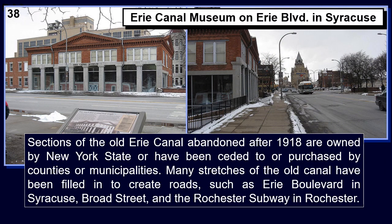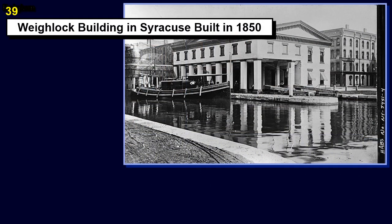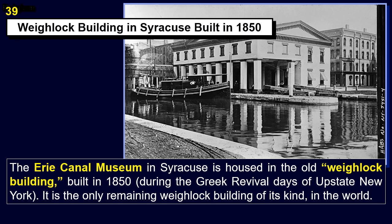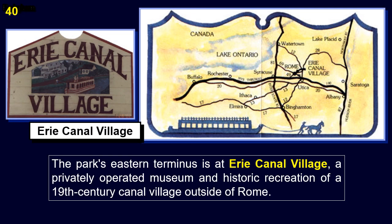Sections of the Old Erie Canal abandoned after 1918 are owned by New York State or have been ceded to counties or municipalities. Many stretches have been filled in to create roads, such as Erie Boulevard in Syracuse, Broad Street, and the Rochester Subway in Rochester. The Erie Canal Museum in Syracuse is housed in the Old Waylock Building, built in 1850 during the Greek Revival days of upstate New York — the only remaining waylocked building of its kind in the world. The park's eastern terminus is at Erie Canal Village near Rome, a privately operated museum and historic recreation of a 19th-century canal village.